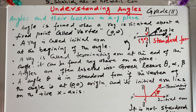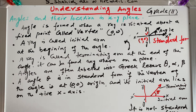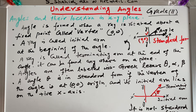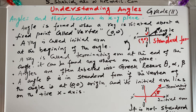For an angle to be in standard form, the vertex should be at (0, 0), the initial arm at the positive x-axis, and the terminating arm can be anywhere in the XY plane.